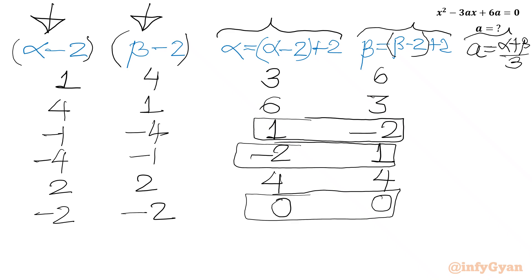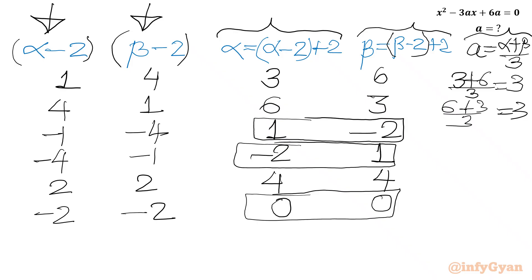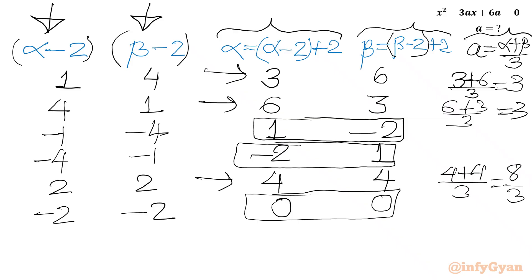Now calculating the value of A using equation 3: A = (alpha + beta)/3. First case: (3 + 6)/3 = 9/3 = 3. Second case: (6 + 3)/3 = 3 — same value. Third case: (4 + 4)/3 = 8/3. So we have two A values: A = 3 and A = 8/3.